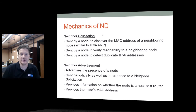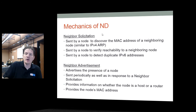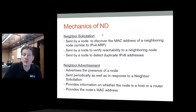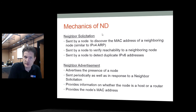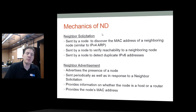Hosts can also perform neighbor solicitation — the replacement for ARP. A host will ask a neighbor: are you reachable, and if so, tell me your MAC address. This is also a great way to discover duplicate IPv6 addresses in the local scope. Neighbor advertisement is the response to a solicitation — it provides information on whether the node is a host or a routing device, and supplies the MAC address of the node sending the advertisement.